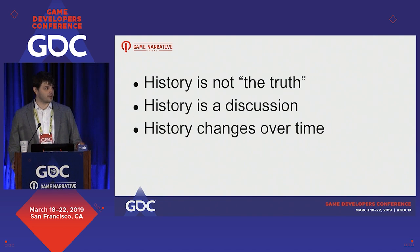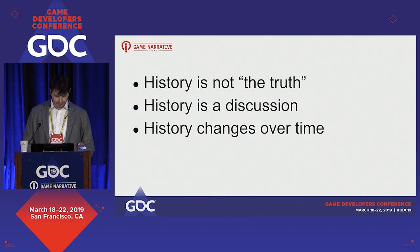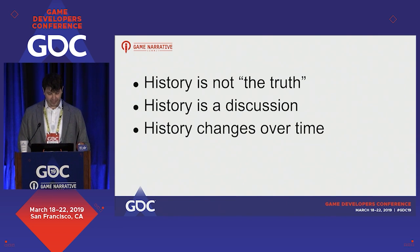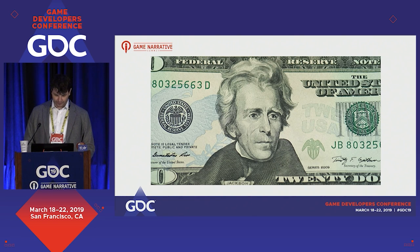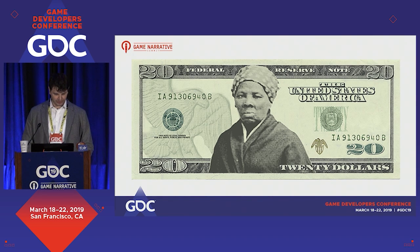For instance, historians in the early 20th century would have rated Andrew Jackson as one of our best presidents for his military victories and his role in expanding democracy, while contemporary ones rightly criticized him for his slaveholding and role in the Trail of Tears, leaving room for other alternatives. There's Andrew Jackson and the proposed Harriet Tubman $20 bill.